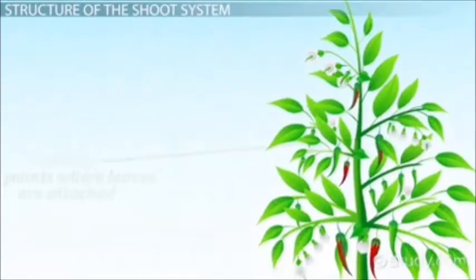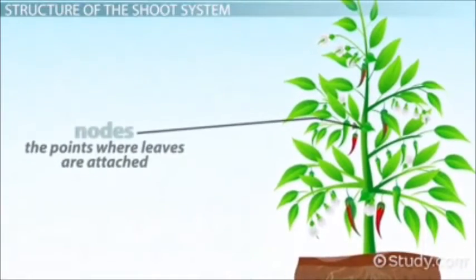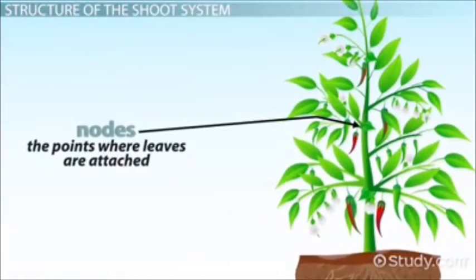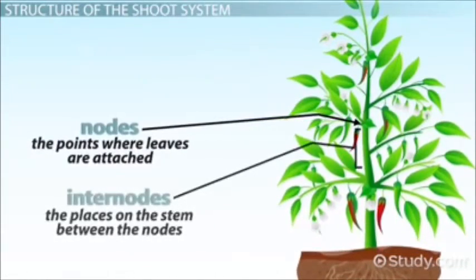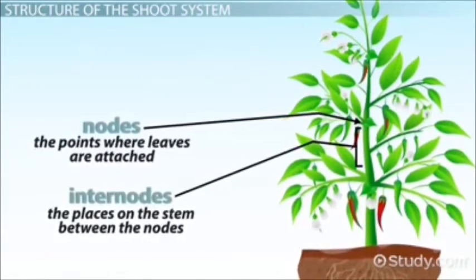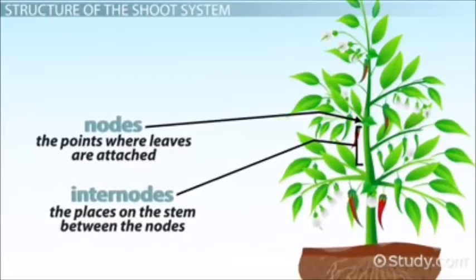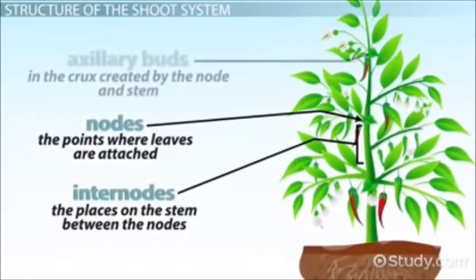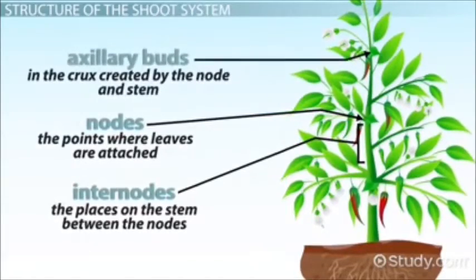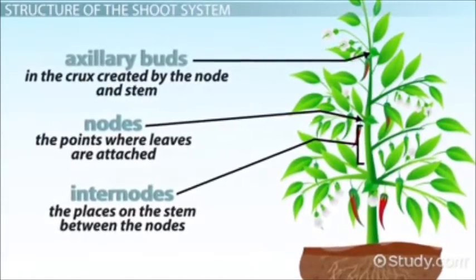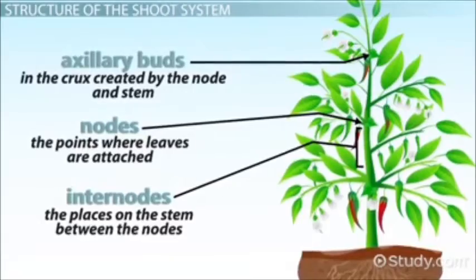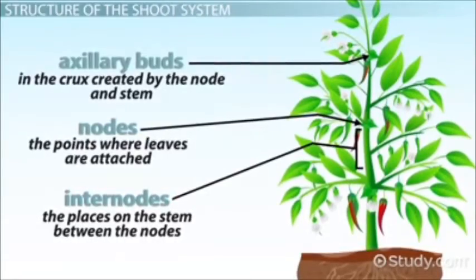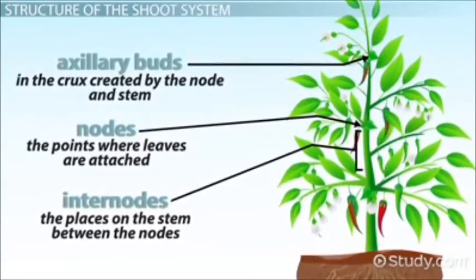Nodes and internodes: nodes are the points where leaves are attached, and internodes are the places on the stem between the nodes. In the crux created by the node and the stem, there are axillary buds that lay dormant but have the potential to grow a vegetative branch.